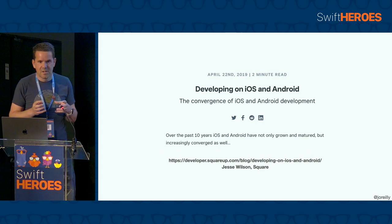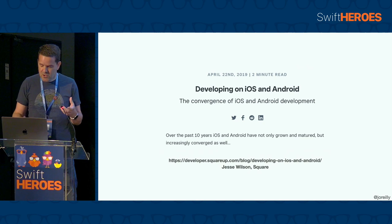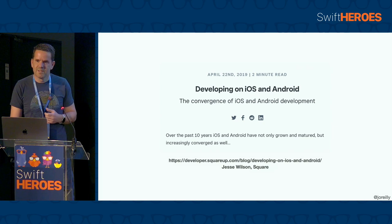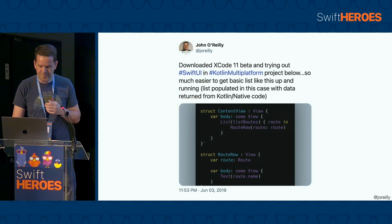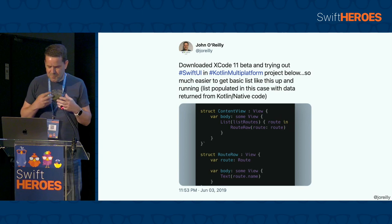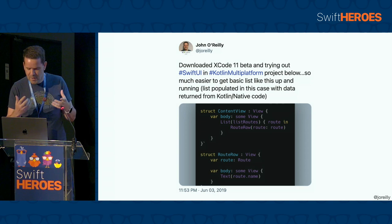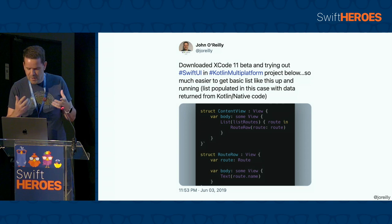This was an article written in April 2019 by Jesse from Square, talking even at that point about how he saw Android and iOS development converging. He was primarily talking about similarities in the languages, but within two months of that article, we'd see the announcement of frameworks on both platforms that would have an even bigger impact on that convergence. First, the announcement of Jetpack Compose at Google IO, then about a month after that, SwiftUI was announced at WWDC. I didn't really appreciate what declarative UI was all about or the impact it would have on mobile development.